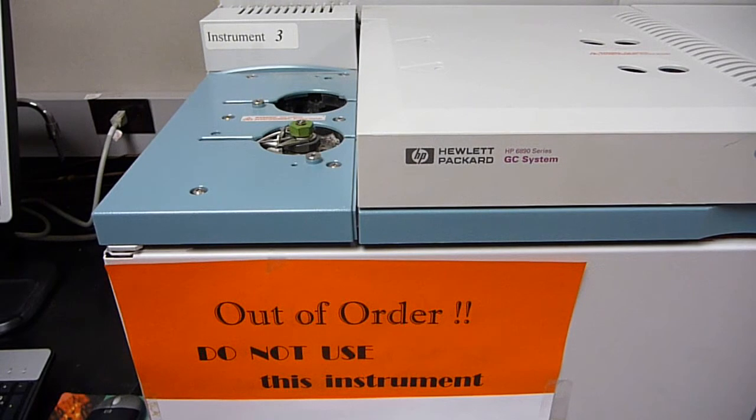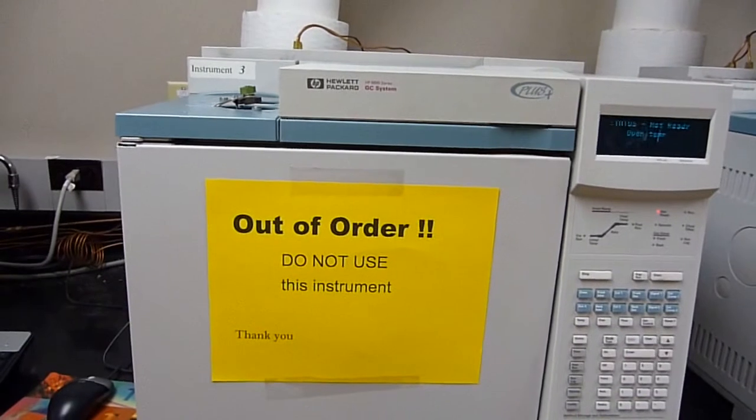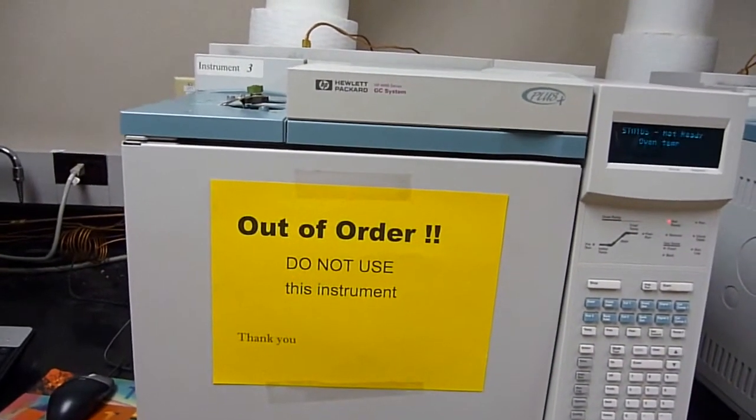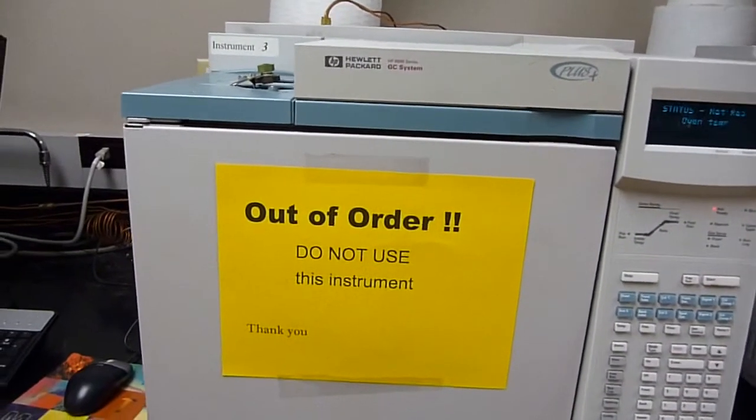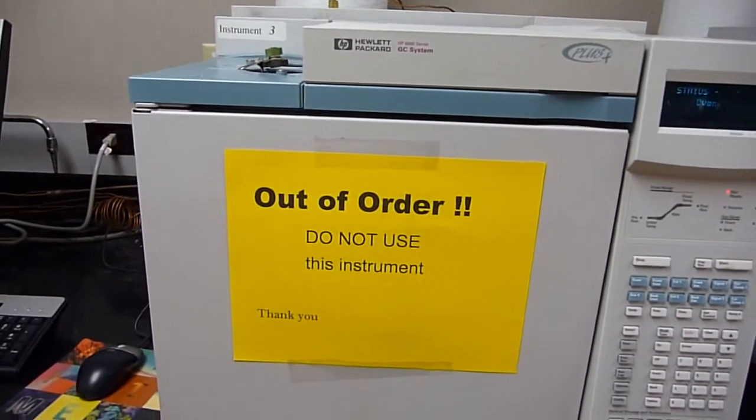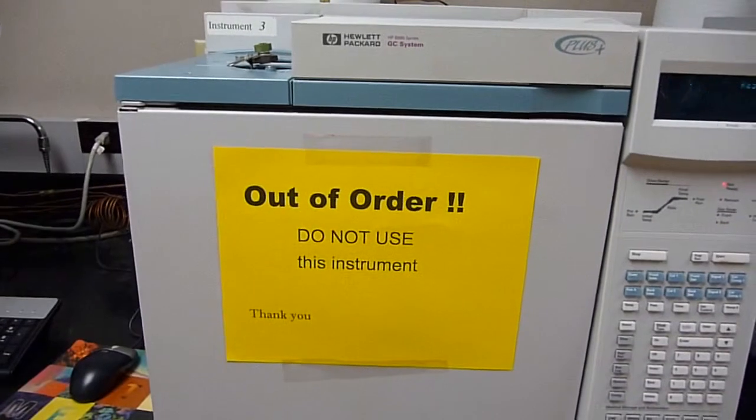Times and descriptions for the various segments of this video are in the YouTube Show More box. This is a repair on a Hewlett Packard, now Agilent, 6893 GC. And the symptom is the oven temperature doesn't heat. So, let's start fixing the problem.